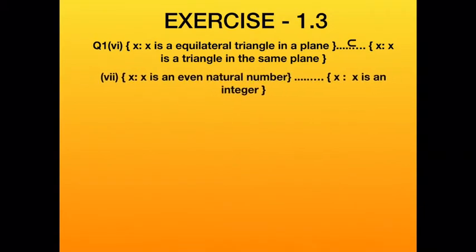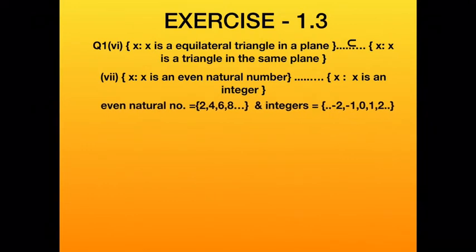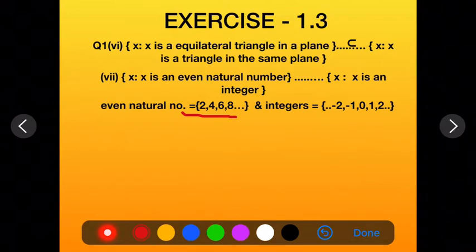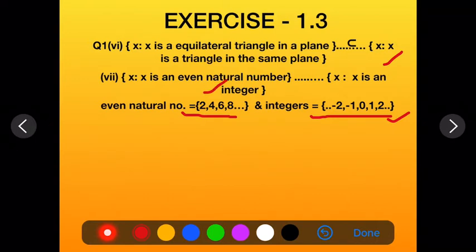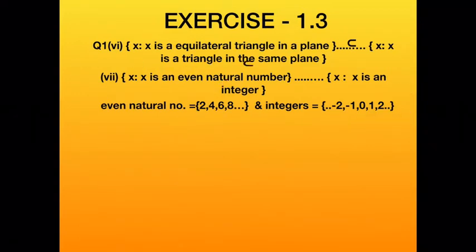The seventh part: the first set is {x : x is an even natural number} — so elements are 2, 4, 6, 8, 10, 12, and so on. The second set is {x : x is an integer}. Writing the second set in roster form gives all integers including 2, 4, 6, 8, etc. Since all elements of the first set are present in the second set, write: subset in the blank.